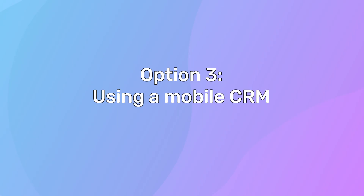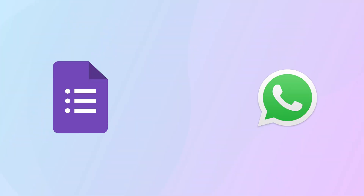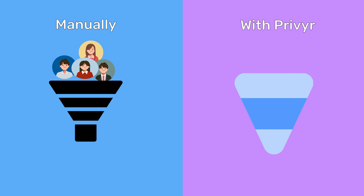This brings us to the next and most effective way of integrating Google Forms with WhatsApp: using a mobile CRM. Mobile CRMs like Previa integrate with both WhatsApp and Google Forms, allowing you to instantly access your new leads and quickly reach out to them via WhatsApp. Previa also helps you automate your repetitive manual tasks and streamline your sales process, making it an excellent choice if you're aiming to improve conversions.